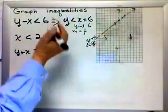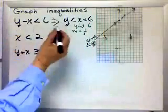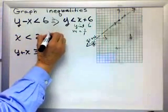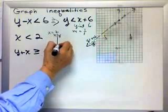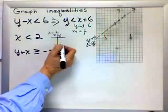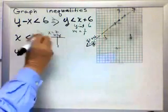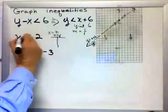Ooh, how do I graph this one? Well, x is less than 2. Let's pretend x equals 2. And I'm going to make a little xy chart for this one because I forget whether this is a horizontal or a vertical sometimes.